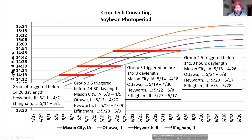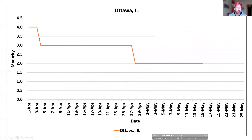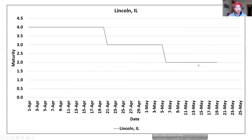As we look at different maturity groups and different dates — for example, at Hayworth, for a group four bean that's going to be triggered on or before May 11th, to get that 200 growing degree units to get the unifoliates out, it'll have to be planted by April 21st. At Ottawa, Illinois, it's a pretty narrow window for a group four, mainly going to be group threes, maybe switching around the 27th of April to a group two to get it to flower early.